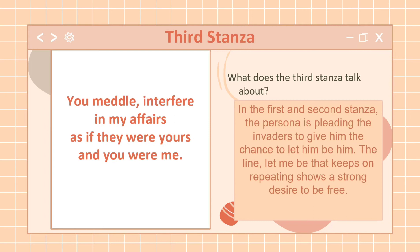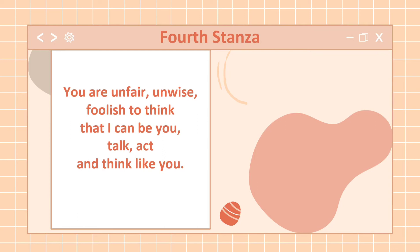For the fourth stanza: 'You are unfair, unwise, foolish to think that I can be you, talk, act, and think like you.' In the fourth stanza, the persona describes the invaders as unfair, unwise, and foolish for having influenced the way Africans think, talk, and act. This means the colonizers or oppressors have influenced how Africans think, how Africans talk, and how Africans act.